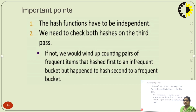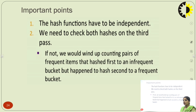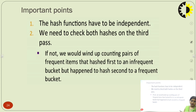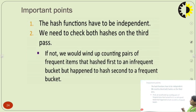Some important points to keep in mind: the hash functions have to be independent, and we need to check both hashes on the third pass. If we do not check both hashes on the third pass, we would end up counting pairs of frequent items that were hashed first to an infrequent bucket but happened to hash second to a frequent bucket. These kinds of problems arise if we do not perform the check on both hashes in the third pass.